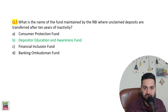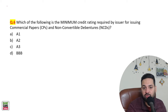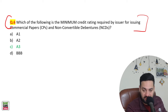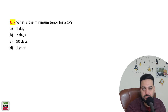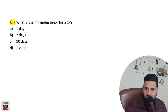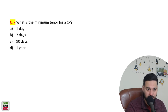Minimum credit rating required by the issuer for issuing commercial papers (CPs) and non-convertible debentures (NCDs) is A3 — at least A3 from a credit rating agency approved by SEBI. What is the minimum tenure of a commercial paper? These kinds of questions are going to be in your Sunday exam — very important latest circular. The minimum tenure of a CP is seven days.